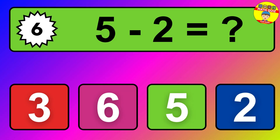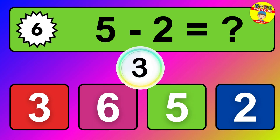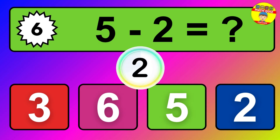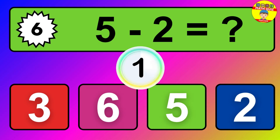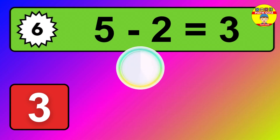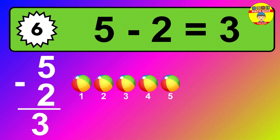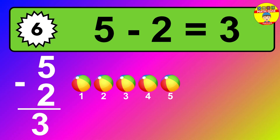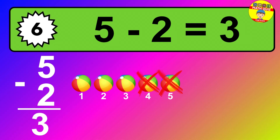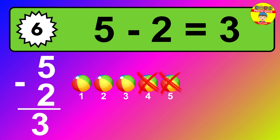Question six: five minus two equals what? So the answer is five minus two is three. Let's count it: one, two, three.